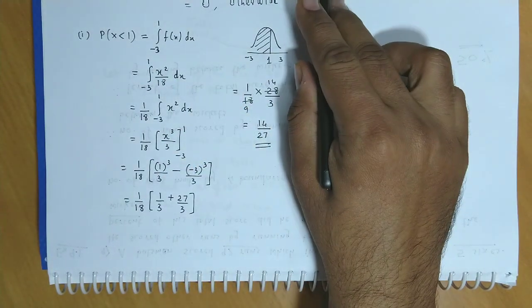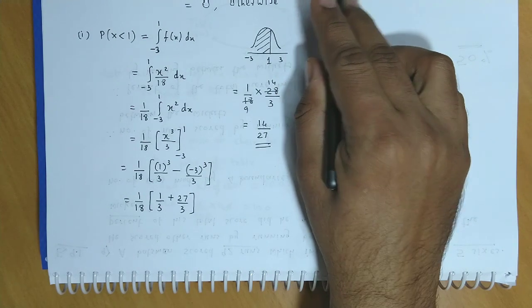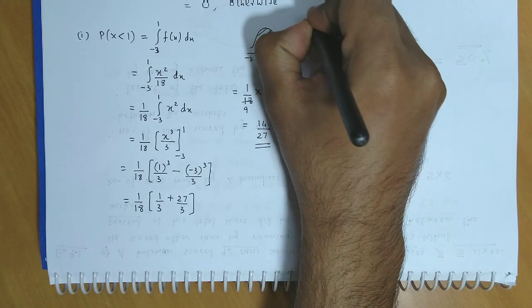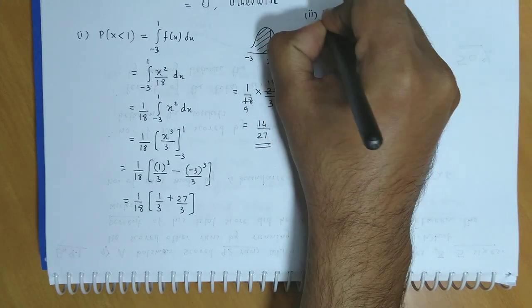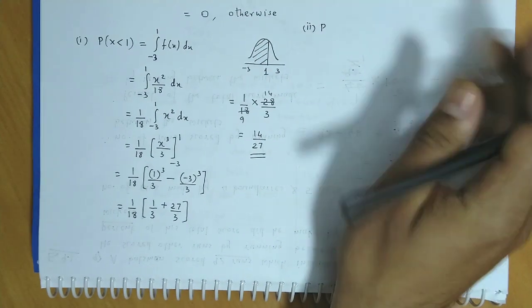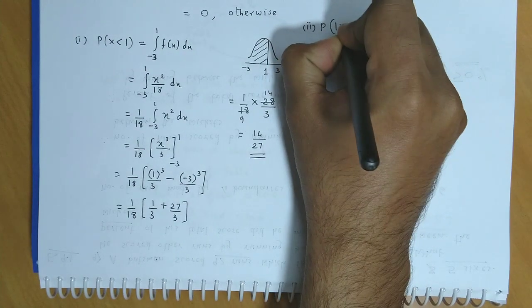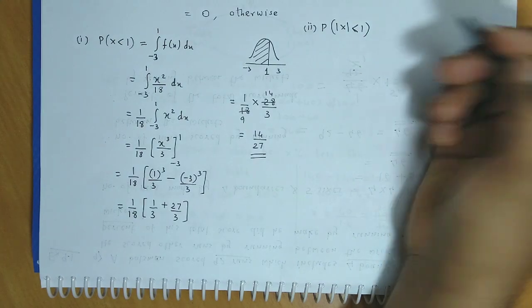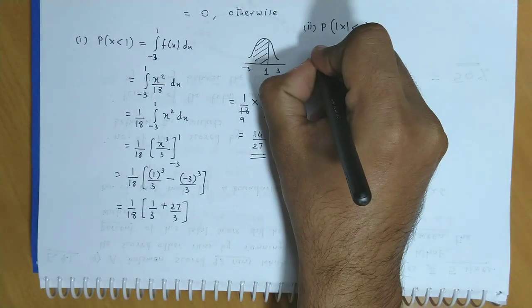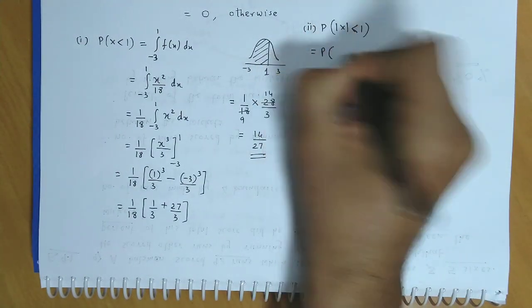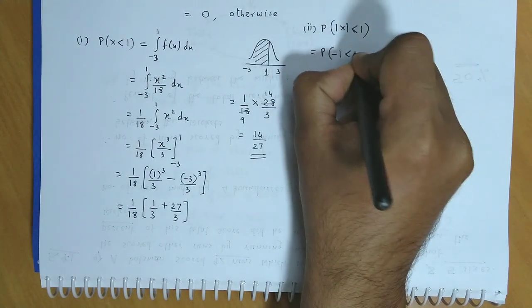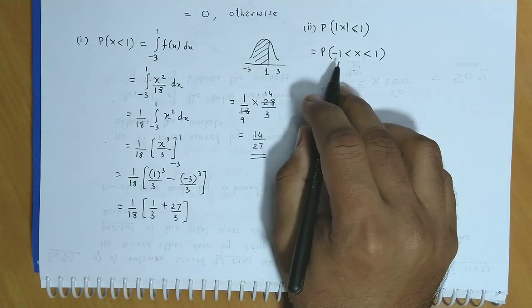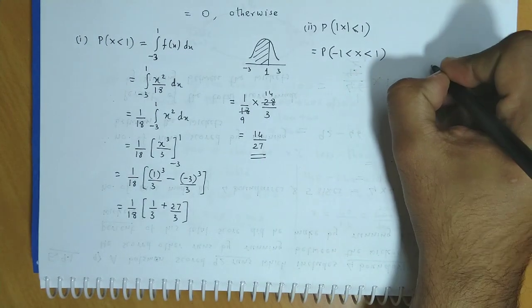Next we find probability for mod x less than 1. Now when mod x is less than 1, we could say x lies between minus 1 and 1. So we integrate between minus 1 and 1.